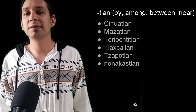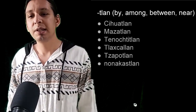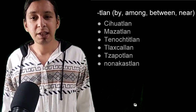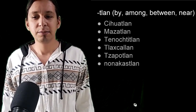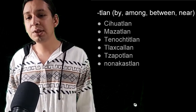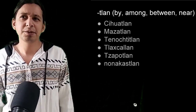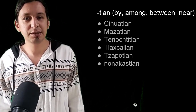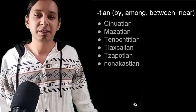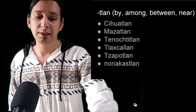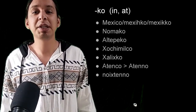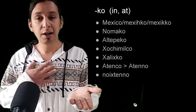Even prepositions use these endings. Nonakastlan means 'next to me' — literally 'place of my ear.' Nomako means 'on my hand.' Altepeko means 'in the city.' Xochimilco means 'at the place of the flower gardens' — from xochimili. The ending -ko means 'place of' or 'at.' Shalishko comes from shali (sand), ish (face/surface), and ko, so 'at the surface of the sandy place.' Atenko, sometimes pronounced Atenco, means 'the place next to the water,' usually a river.